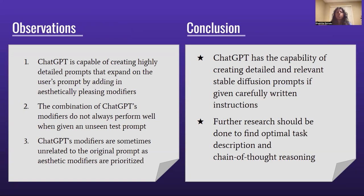Third, ChatGPT's modifiers are sometimes unrelated to the original prompt as aesthetic modifiers are prioritized. Overall, our experiments led us to conclude that ChatGPT definitely has the capability of creating detailed and relevant Stable Diffusion prompts if given carefully written instructions. Additionally, further research can be done to find the optimal task description and chain of thought reasoning that generates the most relevant and aesthetically pleasing images.